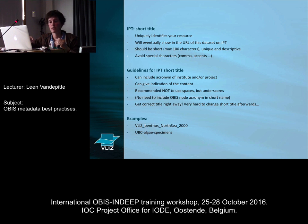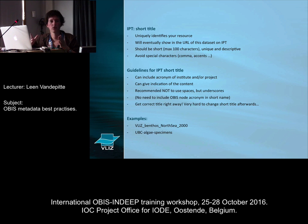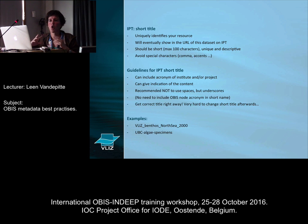On IPT, you have to have a long descriptive title, but IPT also requires a short title for your datasets. That is the title that will eventually show up in the URL of that specific dataset, so it should be short — maximum 100 characters. Within those 100 characters, you have to try to be as unique and descriptive as possible. You also have to avoid special characters, as the IPT doesn't like commas, accents, and so on within the title.